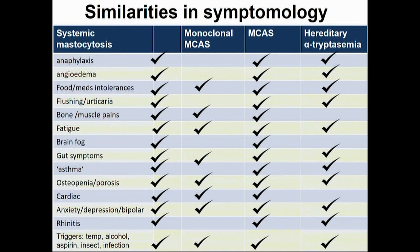Thinking across the spectrum of mast cell disorders, there are many similarities in the symptomology across mastocytosis, monoclonal and non-monoclonal mast cell activation syndrome, and hereditary tryptasemia. There are also similarities in response to treatment.